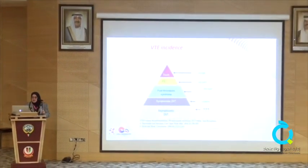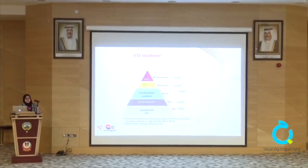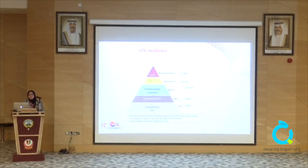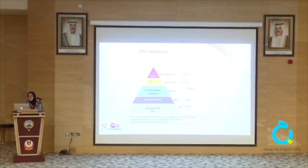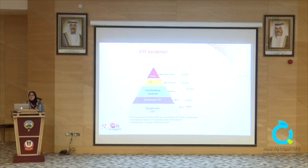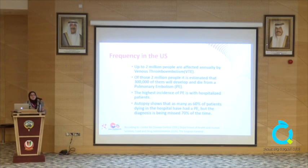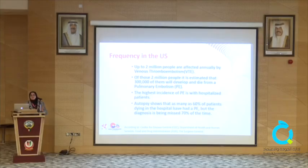The incidence of asymptomatic VTE is not known, but if we look at symptomatic DVT worldwide it is about 2 million per year. Post-thrombotic syndrome is about 800,000 per year, PE from DVT is 600,000 per year, and deaths from DVT/PE are about 200,000 per year. In the United States, the numbers are almost the same — 2 million VTE per year, of whom 300,000 would develop PE and die from it.